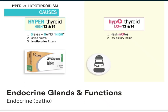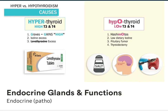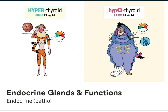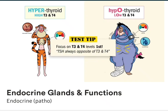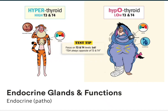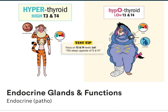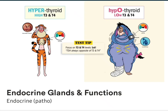Other causes are low iodine in the diet. And a big one — big test tip here — pituitary tumor. And even antithyroid treatments like a thyroidectomy, where we take out that thyroid gland and now the body can't produce any thyroid hormones at all. As far as diagnostic tests, don't let the NCLEX trick you. Always focus on T3 and T4 first. If T3 and T4 are high, then it's hyperthyroid. And if it's low, then it's hypo.